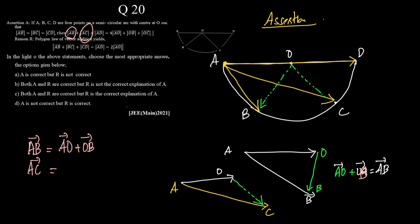So A to O, O to C. What do we get? AC, head to tail, sorry, tail to head, then head to tail, then tail to head. So AO plus OC gives us AC, which means I can write AC is equal to vector AO plus vector OC.